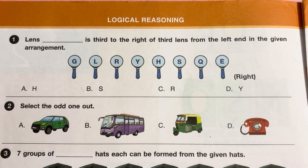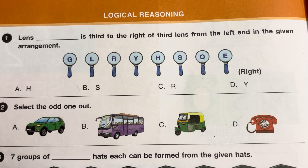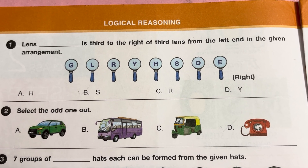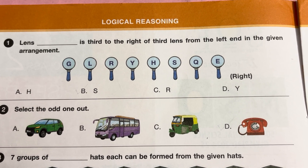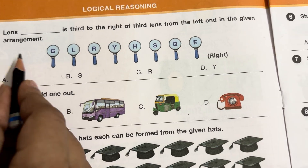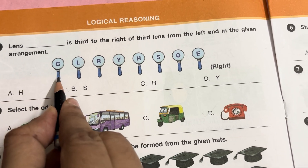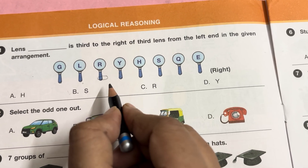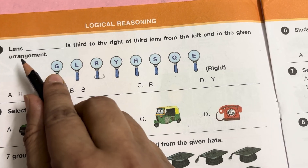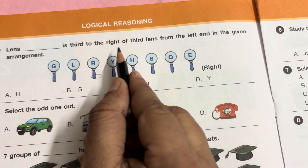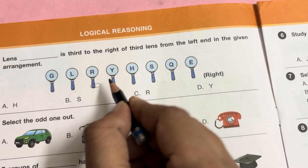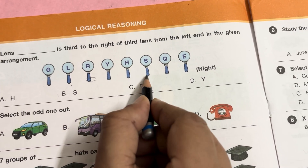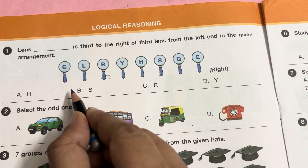First, logical reasoning question 1. Lens dash is third to the right of the third lens from the left end in the given arrangement. This is the left end; first, second, third — this is third from the left end. Now, lens dash is third to the right: one, two, three. This is third. So the answer is B.